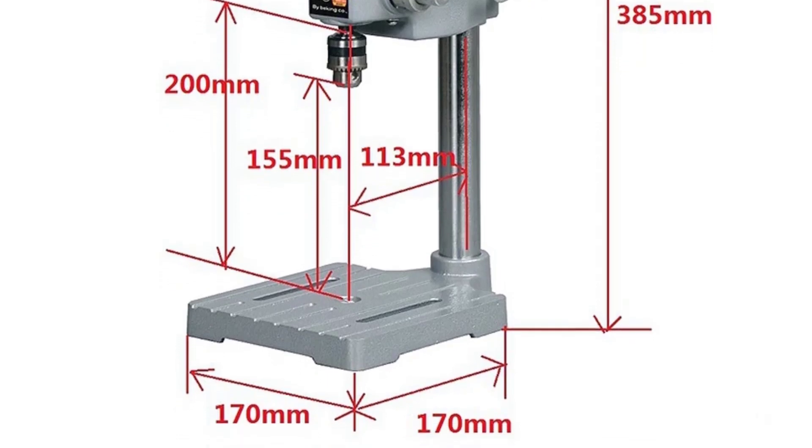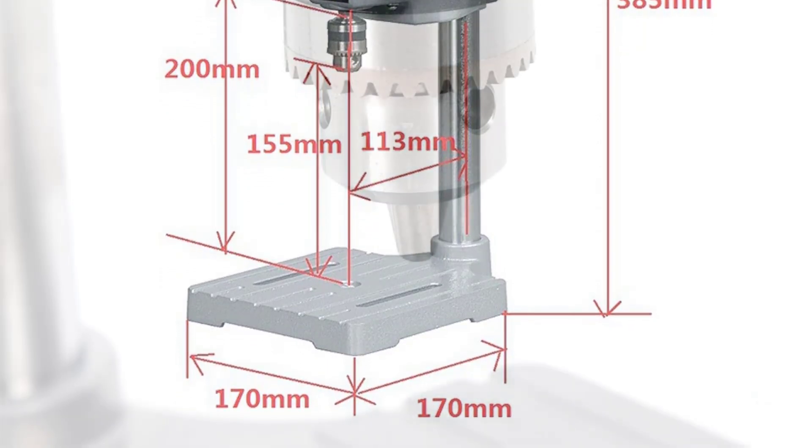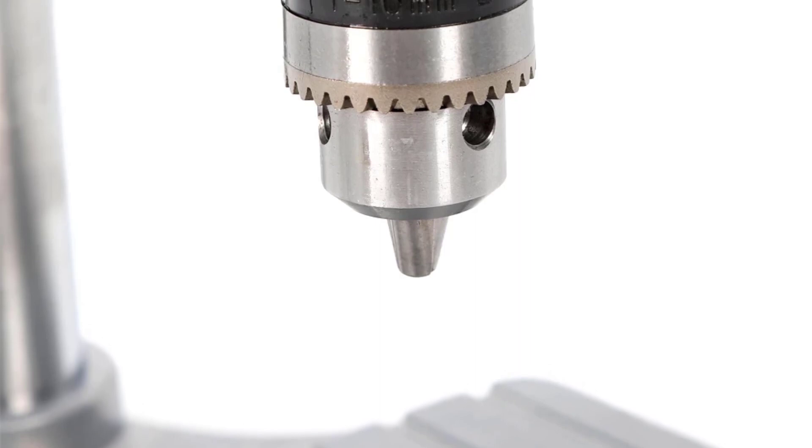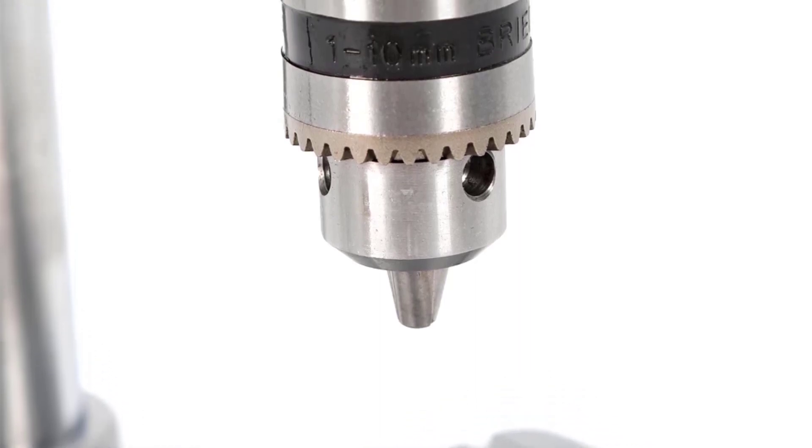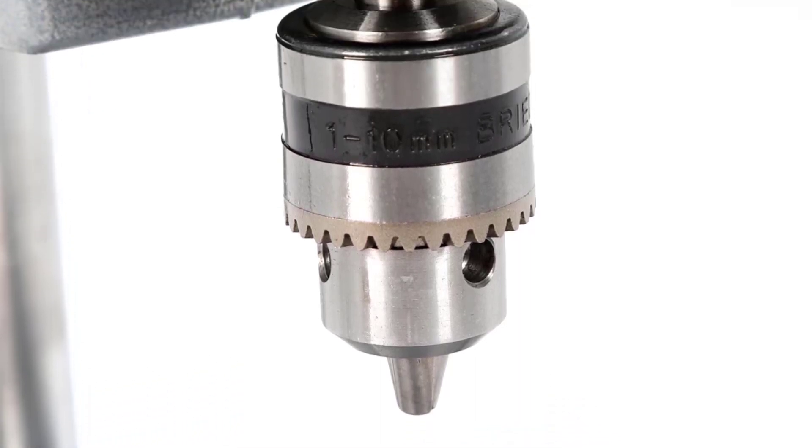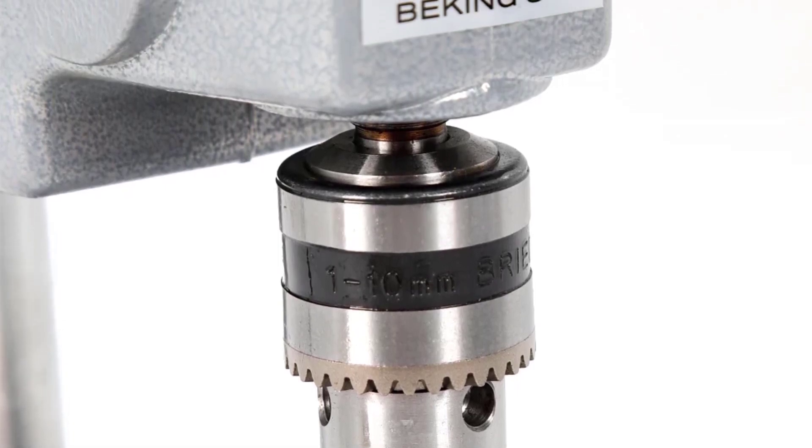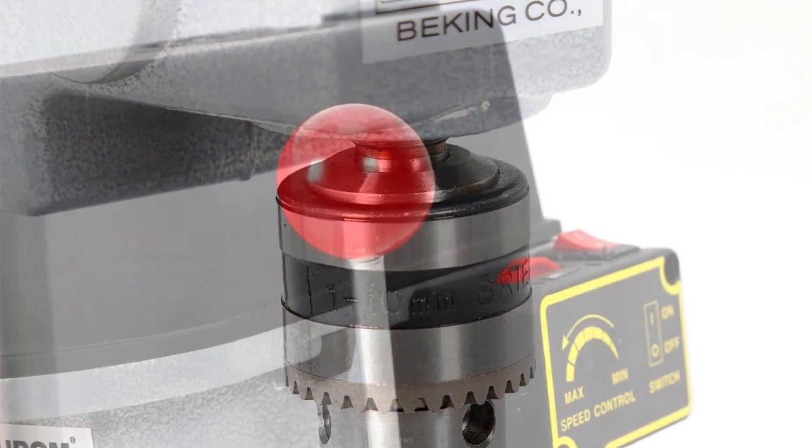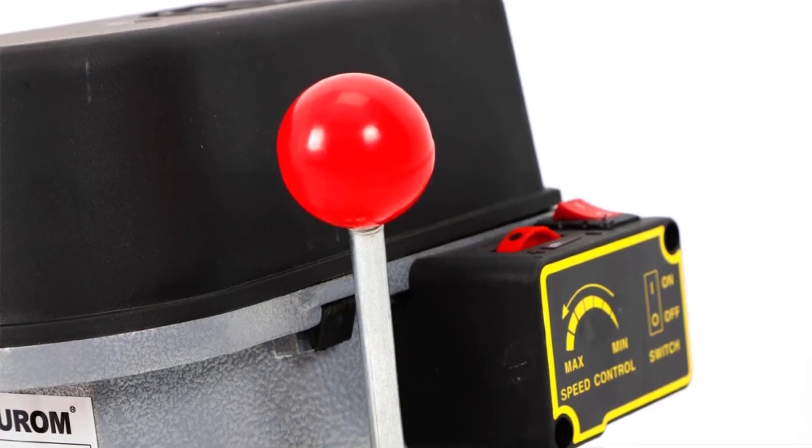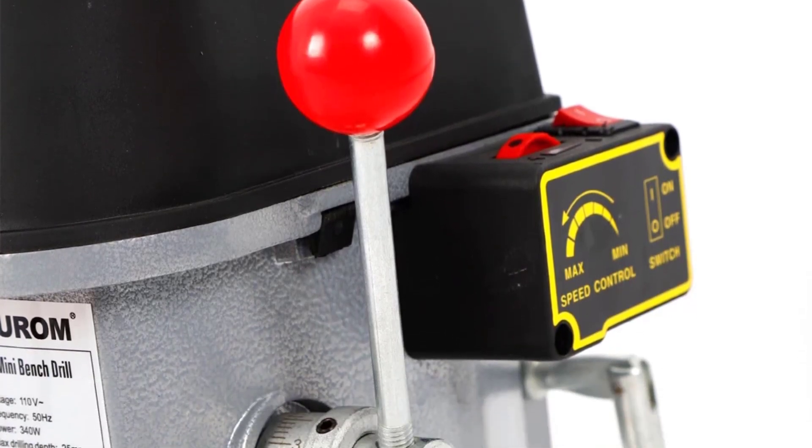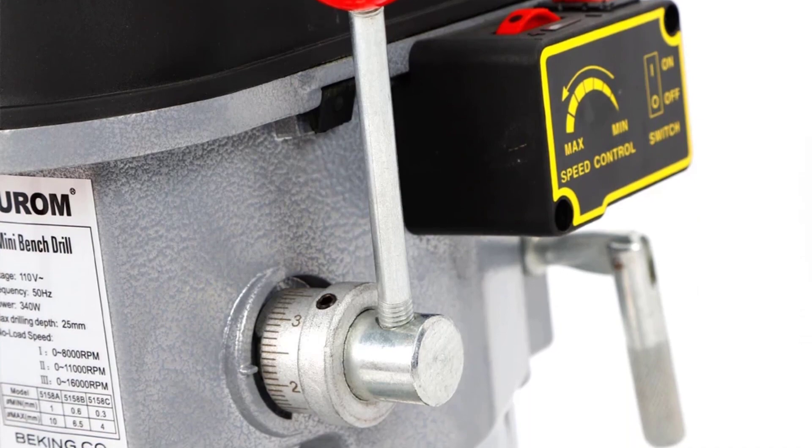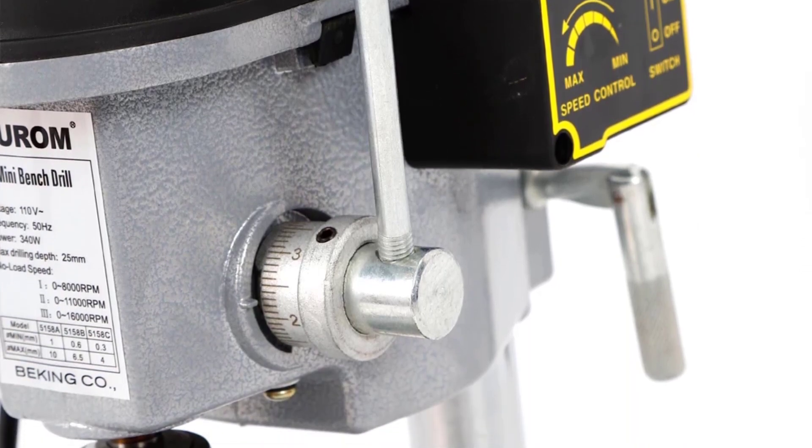Setting up the CNC EST Mini Bench Drill Machine was a breeze. The user-friendly controls and clear instructions in the manual made it easy to get started. The adjustable depth settings and responsive control panel allow for customization based on the specific requirements of the job. The 220V power supply ensures compatibility with standard outlets, making it convenient for any workshop environment.